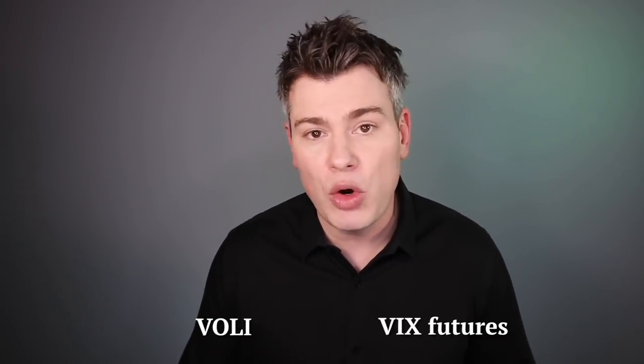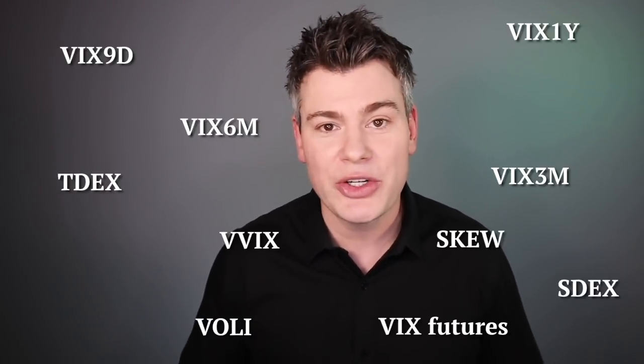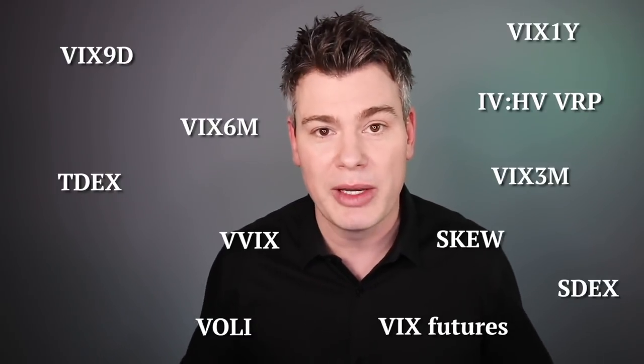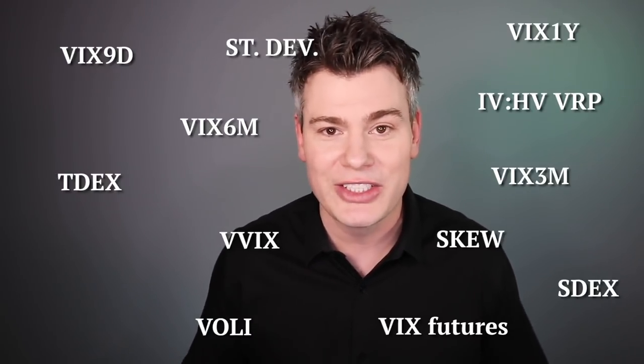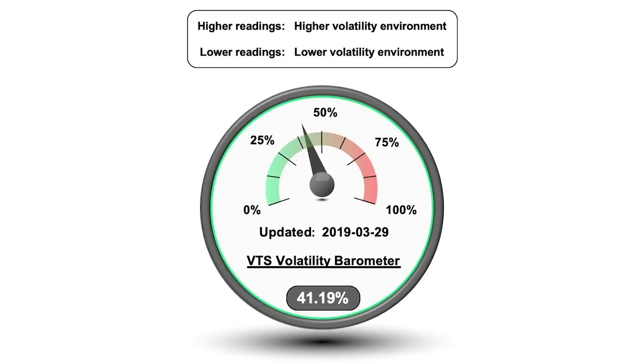The other problem is it's not the only measure of market volatility — there are actually many. I already mentioned the Voli and the VIX futures, which in my opinion are probably a little better than the VIX. But there's also the VIX 9D, the 3M, the 6M, 1Y, VVIX, SDEX, TDEX, SKEW, different ways to measure implied and historical volatility, the volatility risk premium, moving average crossovers, standard deviations, average true ranges. There are many indicators out there, and I've got something better than all of them — because it is all of them, and more. The VTS Volatility Barometer is all of my best volatility metrics combined into a single index.